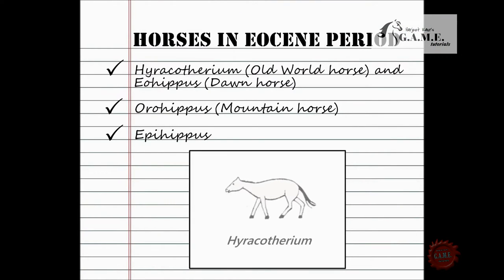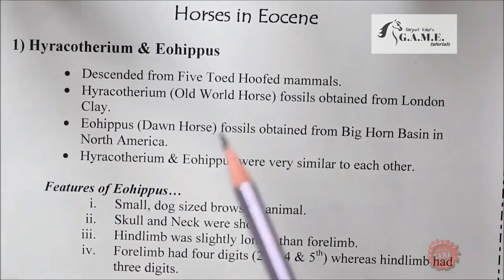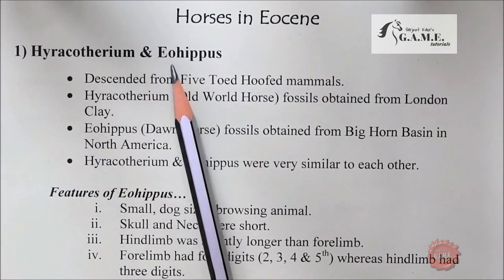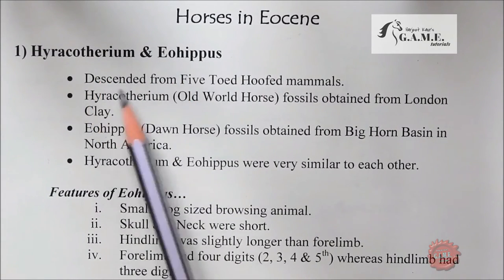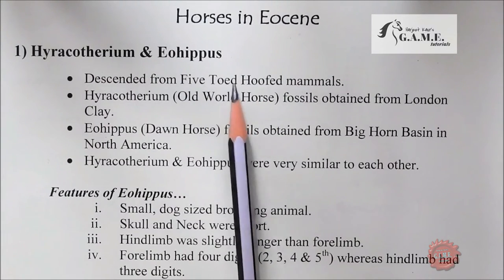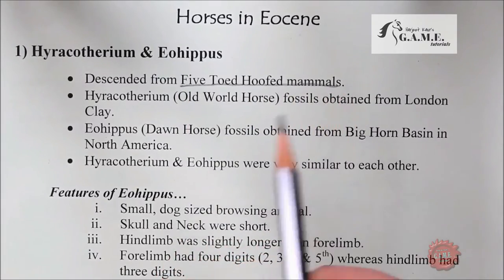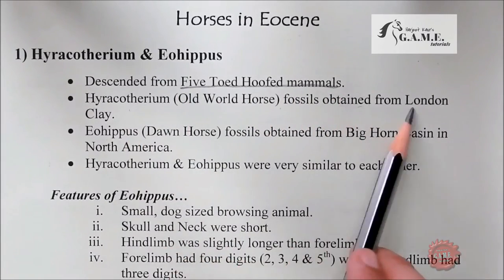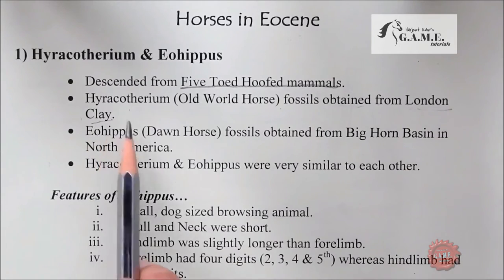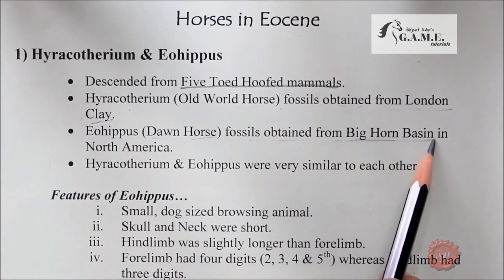The Eocene horses were Heracotherium, Eohippus, Orohippus, and Epihippus. Heracotherium and Eohippus descended from five-toed hoofed mammals. Heracotherium fossils were obtained from London Clay, whereas Eohippus fossils were obtained from Big Horn Basin in North America.